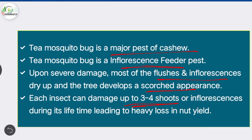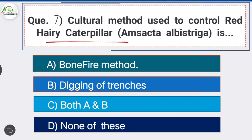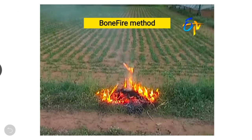Question 7: Cultural method used to control red hairy caterpillar (scientific name Amsacta albistriga) is Option A, the correct answer: bonfire method. Both bonfire method and digging of trenches can be used to control red hairy caterpillar in the ground, but bonfire method is a cultural practice while digging of trenches is a mechanical practice.